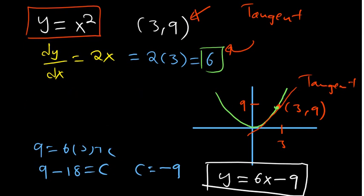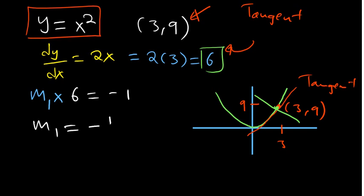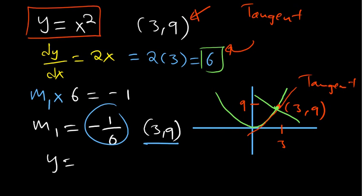For the normal, the product of the gradient of the normal line with the gradient of the curve — which is 6 — equals negative 1. So the gradient of the normal is negative 1 over 6. We have our coordinate (3, 9) where the normal cuts the curve. Applying the same principle with y equals mx plus c, find the constant c and then write the equation.